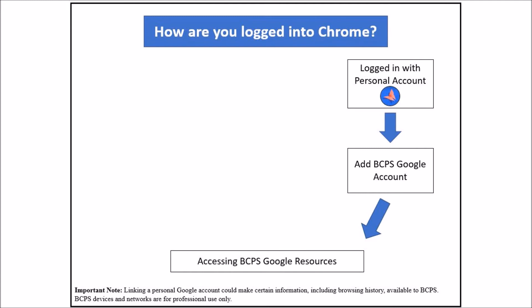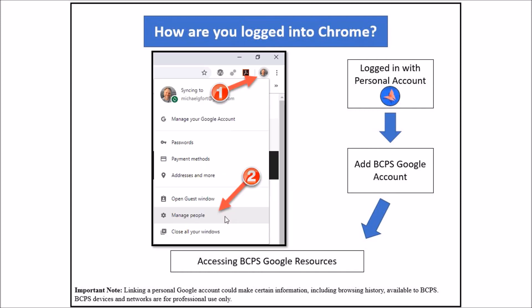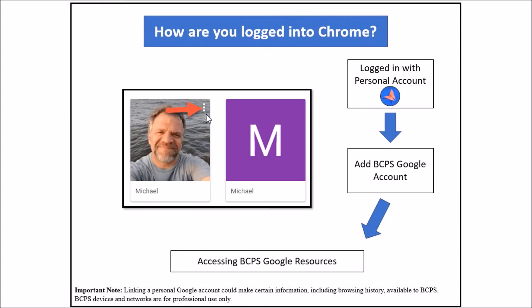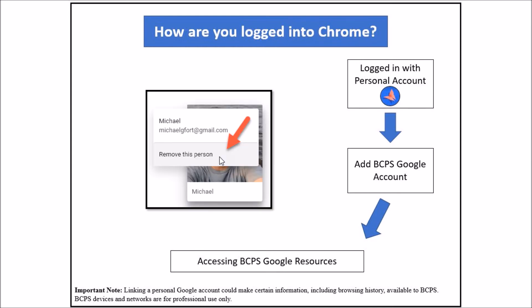Remember, linking a personal Google account could make certain information, including browsing history, available to BCPS. BCPS devices and networks are for professional use only. To remove a personal Google account from your Chrome browser, click on the user icon in the top right corner and select manage people. Hover over the picture for the personal account to be deleted — this will reveal three dots in the upper right-hand corner. Click the three dots and select remove this person to complete the process.